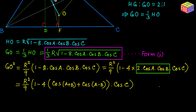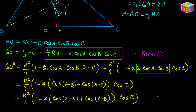Next, since A plus B plus C equals π, we write A plus B as π minus C. So the expression becomes R squared over 9 times (1 minus 4 times (cosine of (π minus C) plus cosine(A minus B)) times cosine C). Now, cosine of (π minus C) equals negative cosine C.